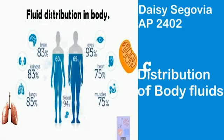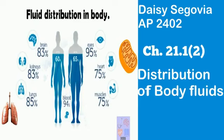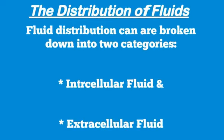Daisy Segovia, AP 2402, Chapter 21.1: Distribution of Body Fluids. Fluid distribution can be broken down into two categories: intracellular fluid and extracellular fluid.